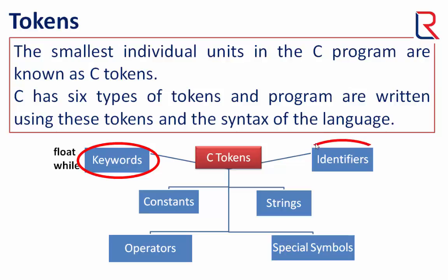Now let's see the identifiers. Identifiers refer to the names of variables, functions, arrays, structures, unions, and enumerations. These are user-defined entities in the program and declared by the user. For example: amount, my_array, etc.